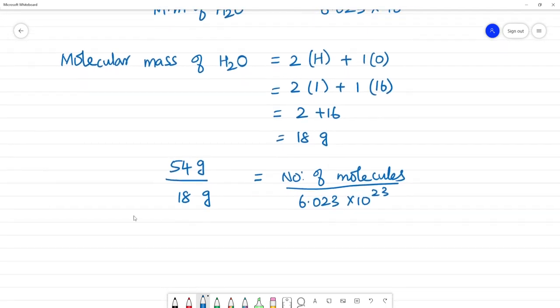Now cancel: 18 into 3 is 54. 3 times cancel, grams cancel. Then cross multiply: 3 multiplied by 6.023 into 10 to the power 23 equals number of molecules.